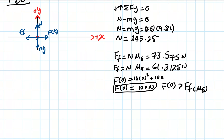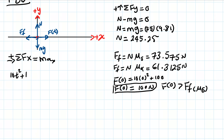Now we sum forces in the x-direction, since movement occurs in the x-direction: ΣFx = m·ax. The applied cable force is positive and friction opposes motion, so: (10t² + 100) − 61.3 = 25·ax.